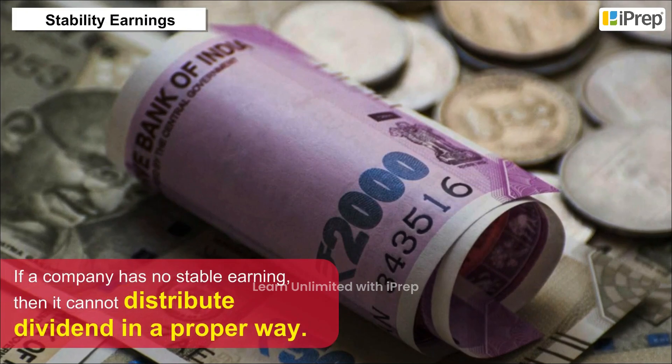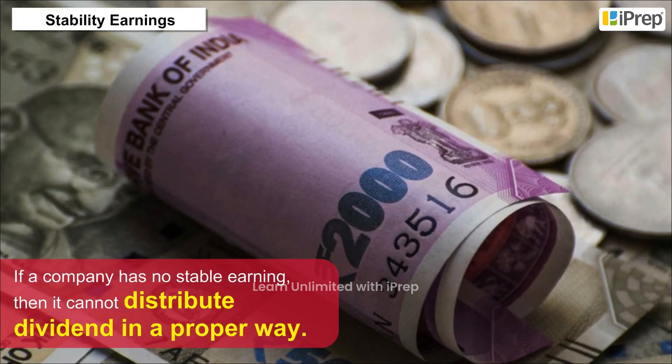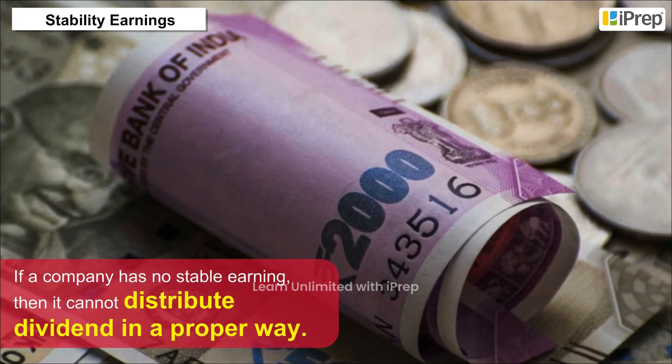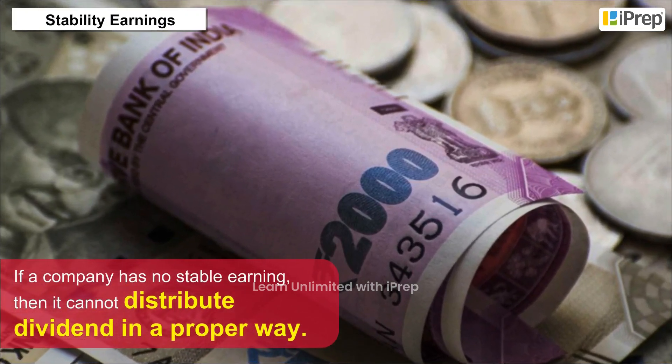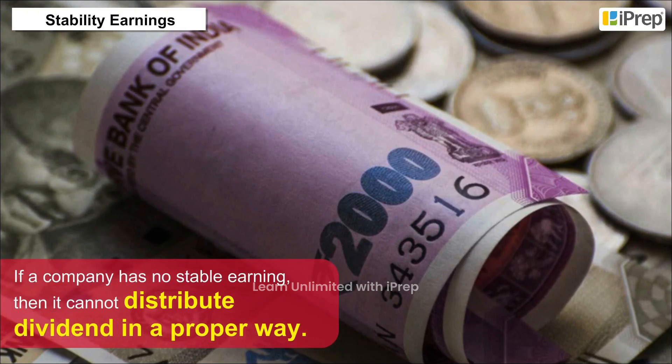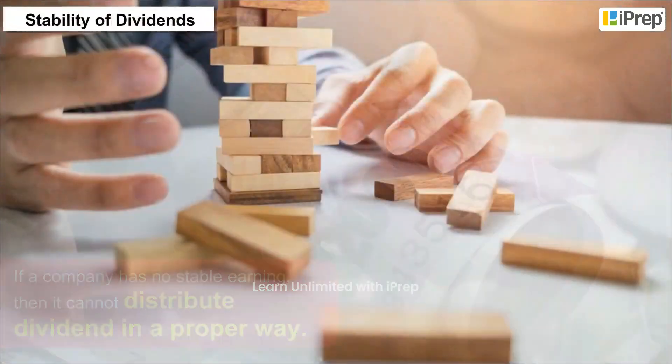Stability of earnings: if a company has no stable earnings, then it cannot distribute dividends in a proper way. Stable earnings will result in higher dividends.